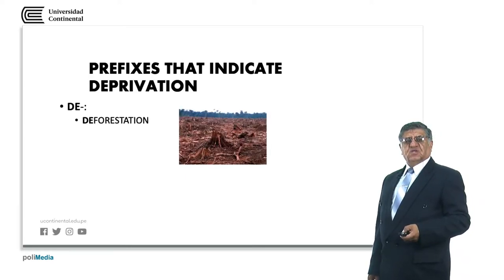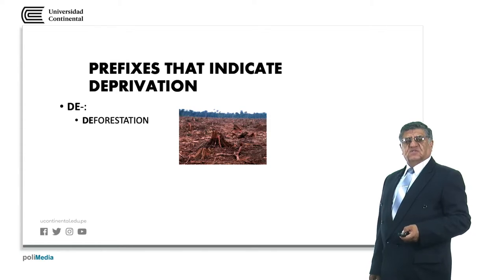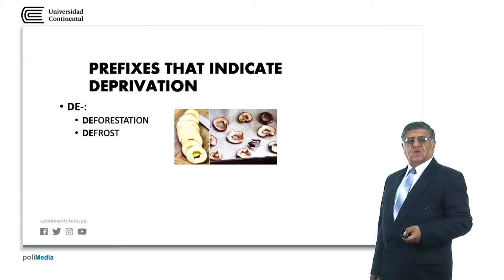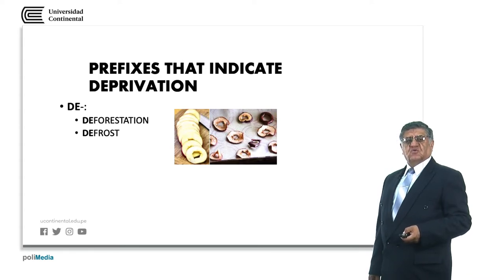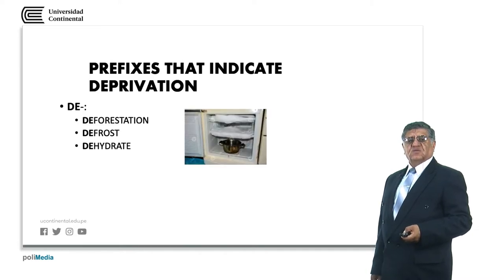De- is a prefix indicating deprivation — something that lacks something. Deforestation: forest is plant, so deforestation is to cut trees — it refers to that action. Defrost: frost makes something very cool, like freezing, and defrost is the opposite — to give temperature to things that were frosted. Dehydrate means to take the water from something.